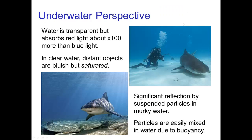It's a very different situation underwater. Water is transparent, but it strongly absorbs red light, much more than blue light. So things underwater tend to have a bluish tint as well. However, instead of being desaturated, it tends to be saturated when it's clear water. On the other hand, if the water is somewhat murky, then we have some Mie scattering from suspended particles, or possibly reflection from suspended particles, which may cause some desaturation. It's very easy for particles to be suspended in water due to buoyancy.